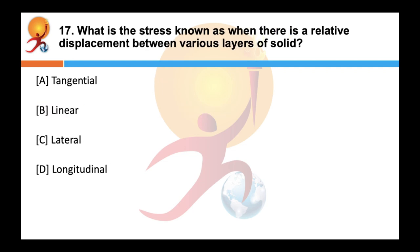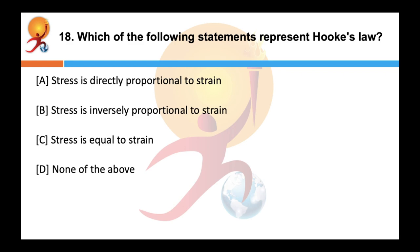What is the stress known as when there is a relative displacement between various layers of a solid? Correct answer is tangential stress. When successive layers of solid move on each other, the stress produced is called tangential stress. What is Hooke's law? Correct answer is — stress is directly proportional to strain. According to Hooke's law, within the elastic limit, stress is directly proportional to strain. Therefore, stress upon strain equals a constant known as the modulus of elasticity.